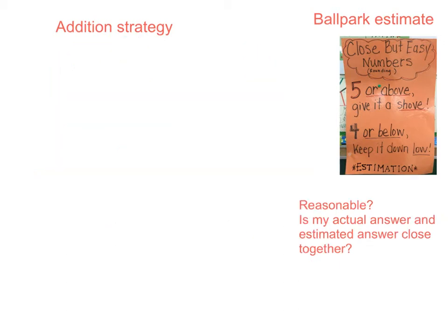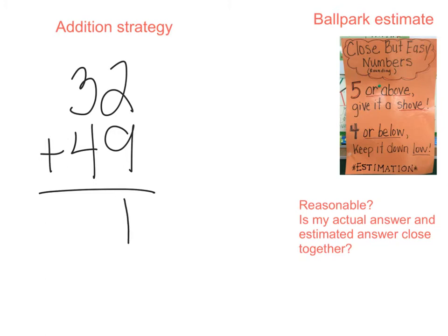Let's try another problem. Let's take the addition problem thirty-two plus forty-nine. If I solve using my favorite addition strategy, two plus nine is eleven. Write the one, carry the one. One plus three is four, and four plus four is eight. My actual answer is eighty-one.